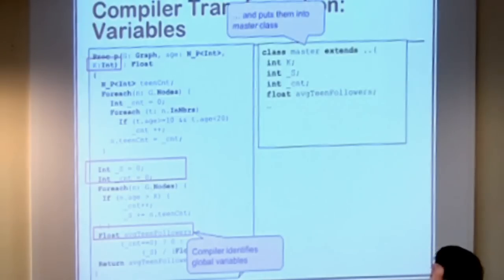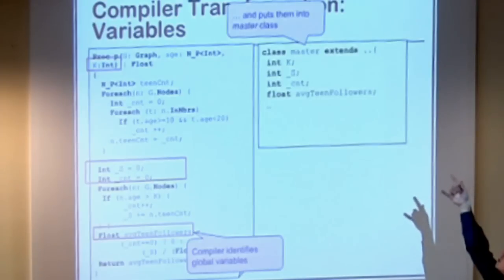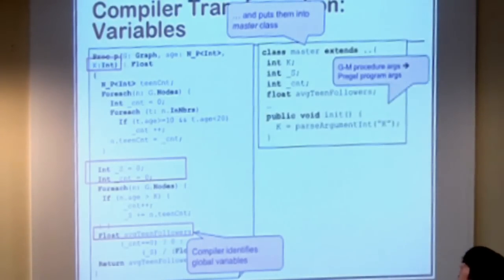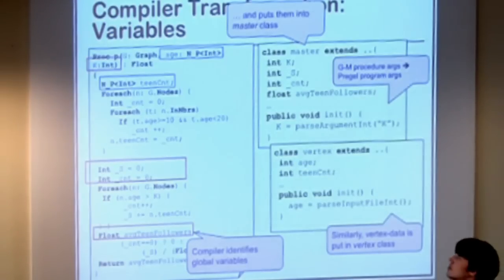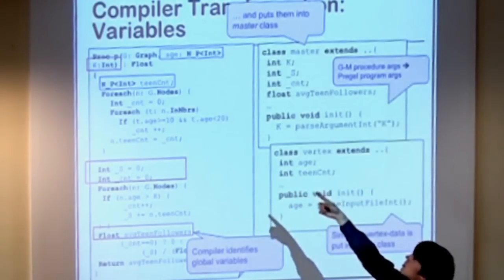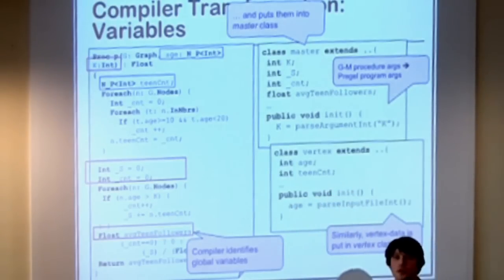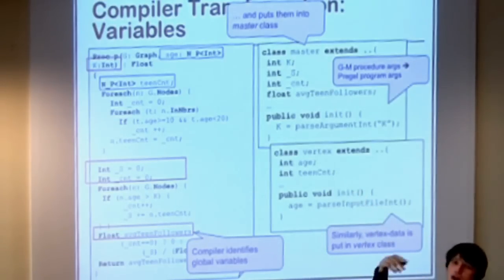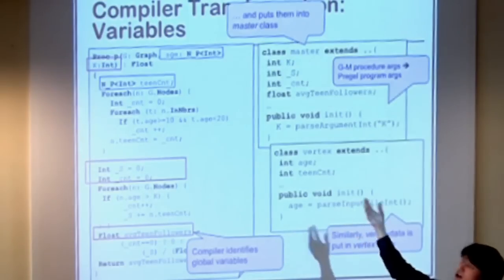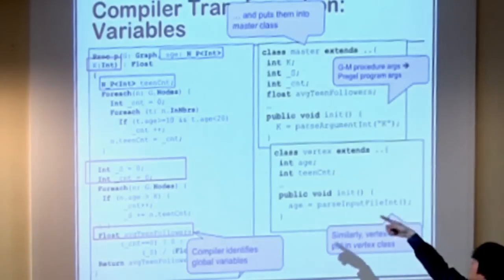So first you would only have the vertex compute, so you could only execute stuff for the vertices. But you can, in your program, you can add a master class, which then does the sequential global computation. And it is alternated with the computation on the vertices. So first all the vertices execute, then the master executes, and then the vertex, and they alternate until either all the vertices or the master decides to shut down. And we also have aggregators to communicate with the master. So the master can put something in an aggregator, and the vertex can read something from an aggregator. And these two things we will use in our transformations.